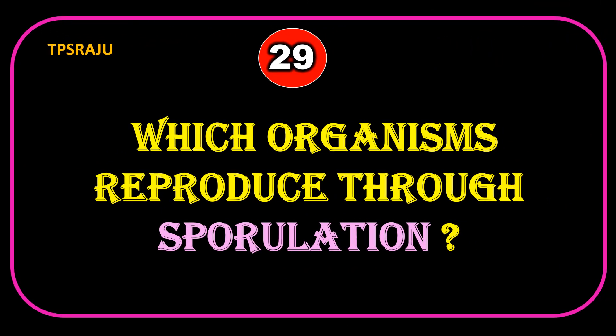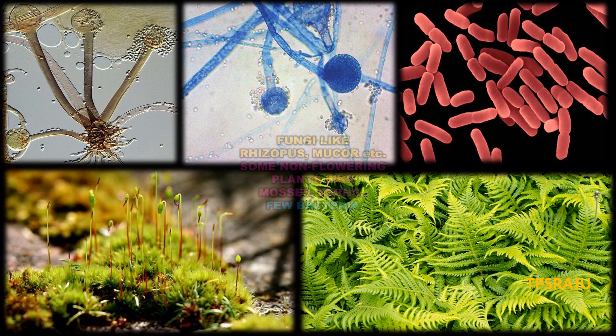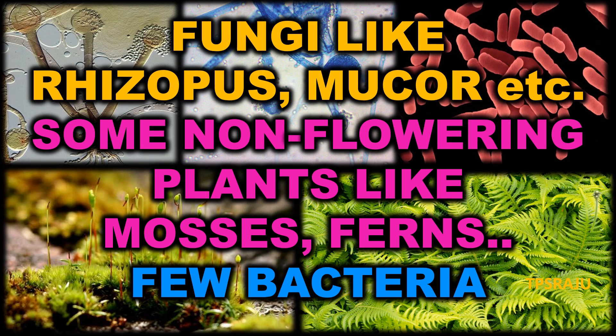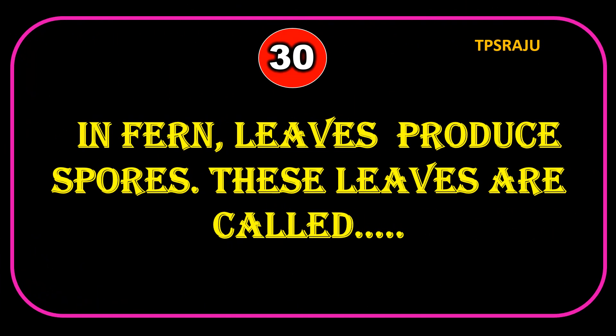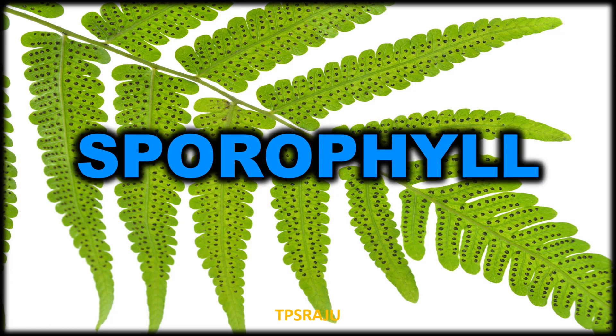Which organisms reproduce through sporulation? Fungi like Rhizopus, Mucor, etc. Some non-flowering plants like mosses, ferns, etc. And eubacteria. In fern, leaves produce spores. These leaves are called sporophyll.